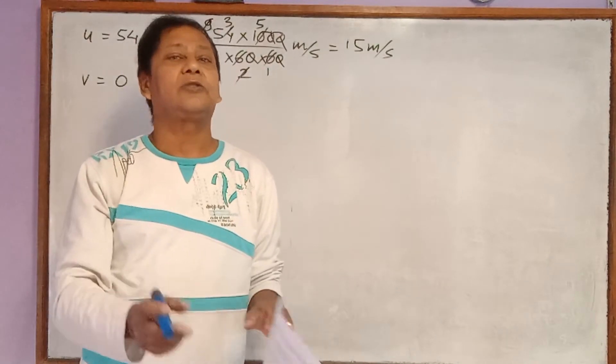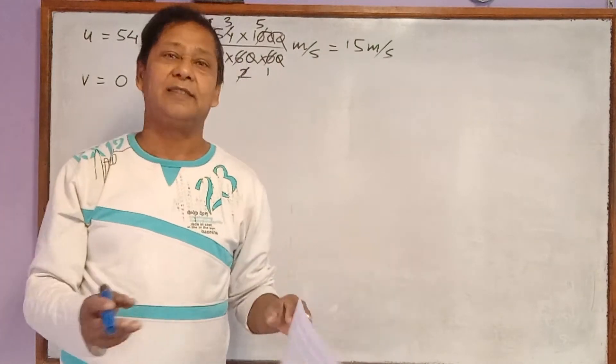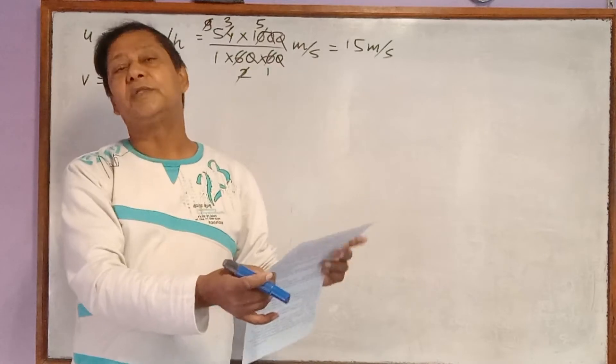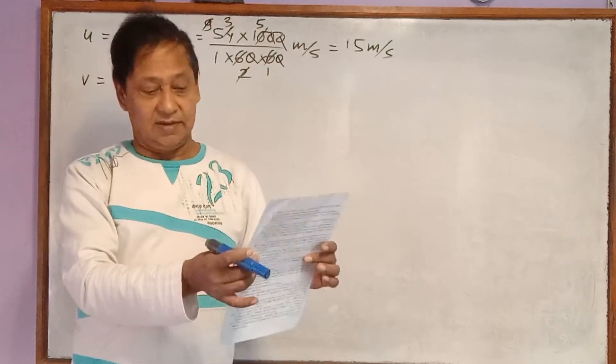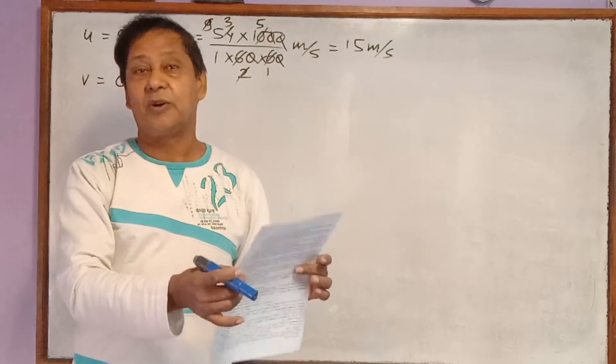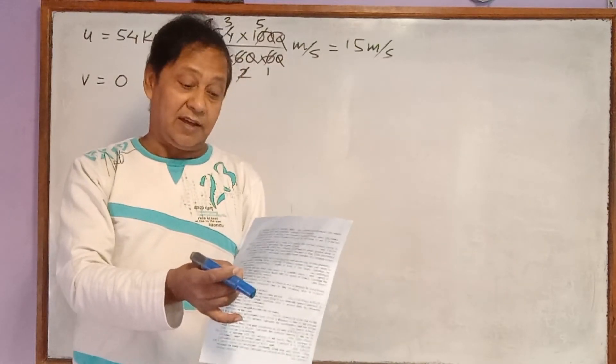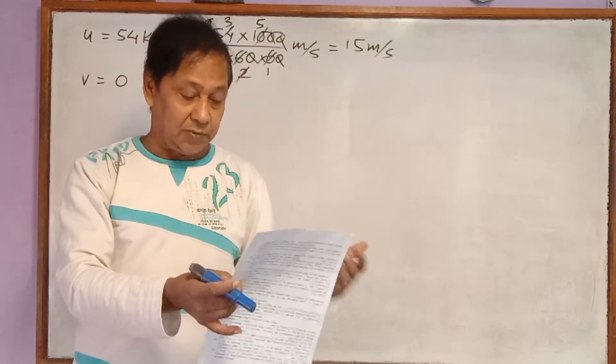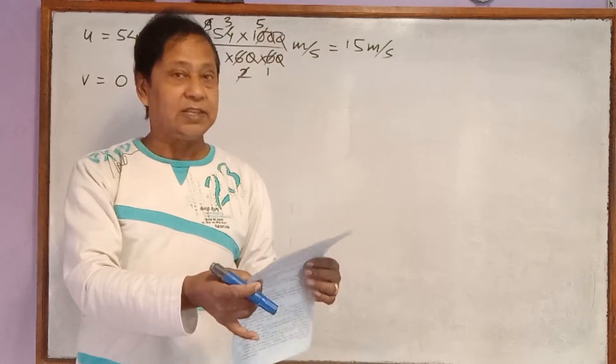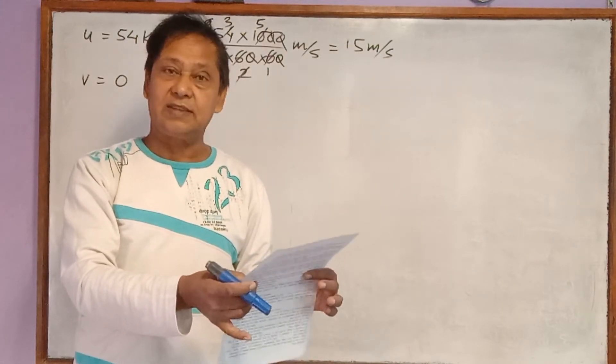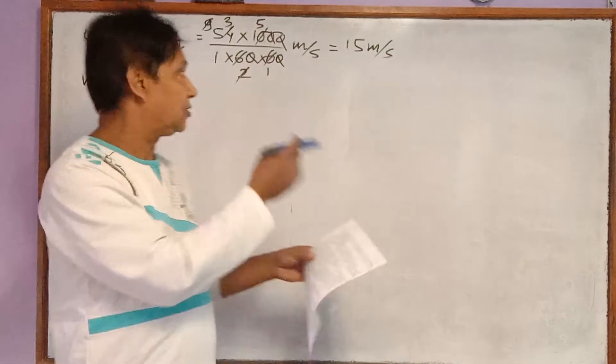That's why this distance is not covered by the car. So this is confusing. 25 meter is not the real distance covered by the car. That's why we have to ignore this distance, but it gives some other information also.